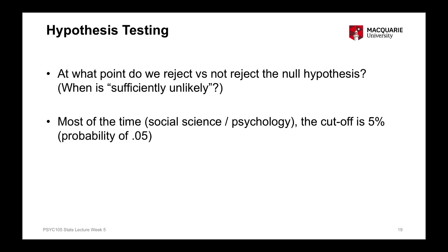If our p-value from the statistical test we run is 0.05 or smaller, we conclude that we have a statistically significant effect. Therefore, we reject the null hypothesis and proceed as if the alternate hypothesis and the research hypothesis is true.